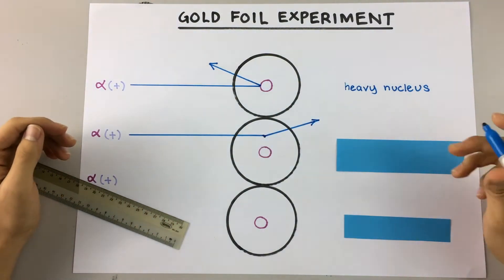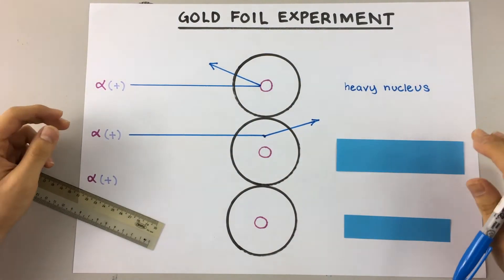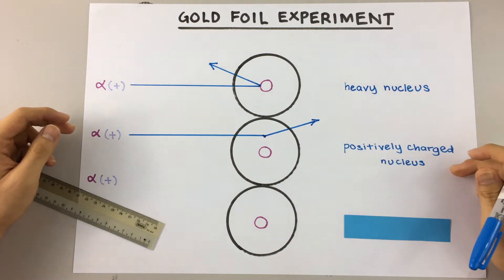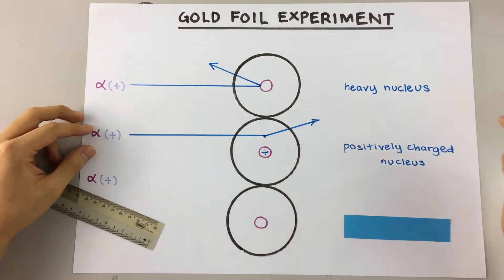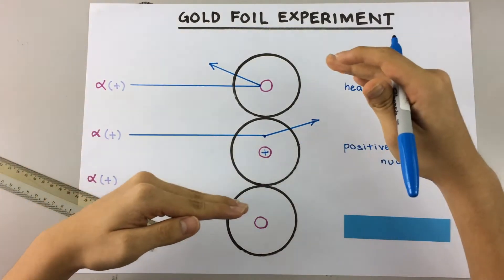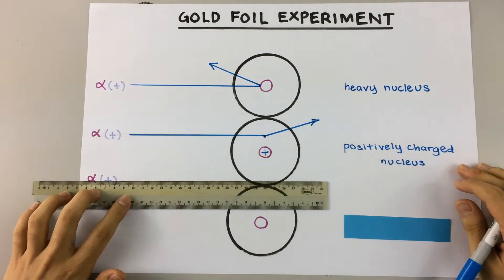Well, it proves that the nucleus in the atom that we saw earlier is also positively charged. So I'm just going to draw a positive sign right here which explains the small deflection because positive and positive repel each other.